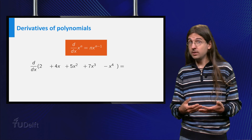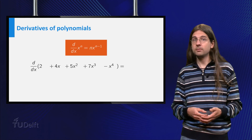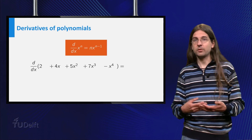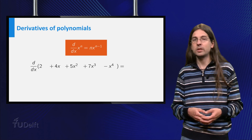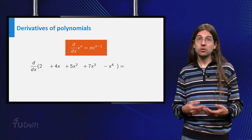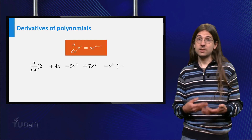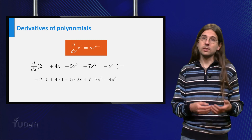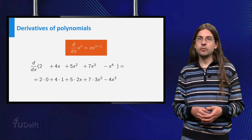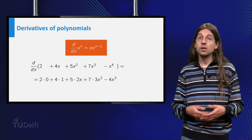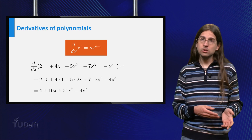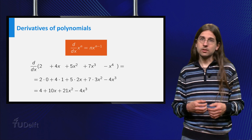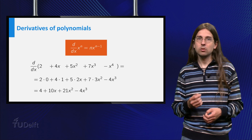You can use the derivatives of power functions to calculate the derivatives of any polynomial. For example, the polynomial 2 plus 4x plus 5x squared plus 7x cubed minus x to the power 4 is the sum of multiples of power functions. Thus its derivative is 0 plus 4 times the derivative of x plus 5 times the derivative of x squared, and so on. We obtain that the derivative equals 4 plus 10x plus 21x squared minus 4x cubed. Notice that the derivative of a polynomial is a polynomial of 1 degree lower.